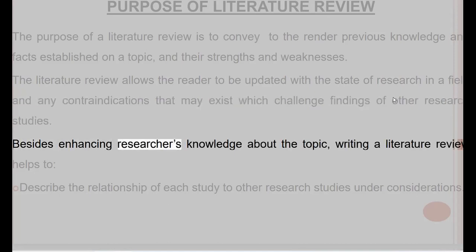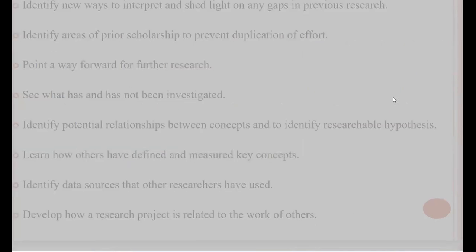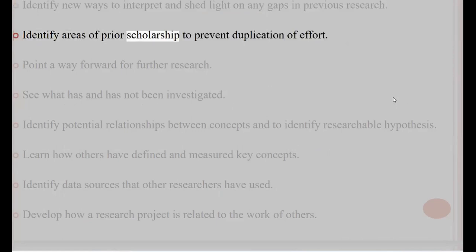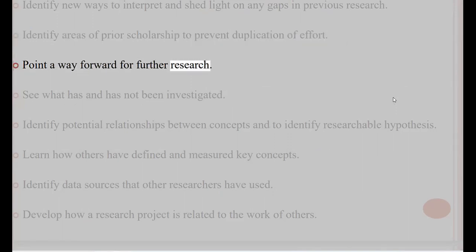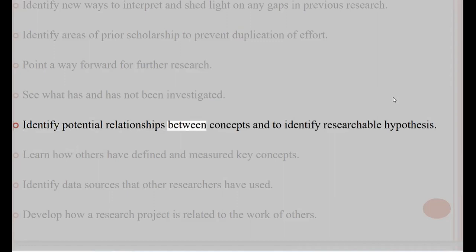Besides enhancing researchers' knowledge about the topic, writing a literature review helps to describe the relationship of each study to other research studies under consideration. It helps to identify new ways to interpret and shed light on any gaps in previous research, identify areas of prior scholarship to prevent duplication of effort, point a way forward for further research, and see what has and has not been investigated.